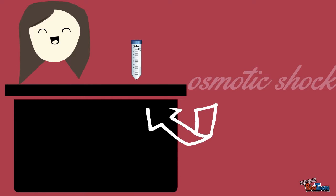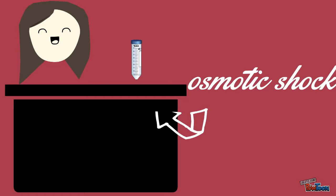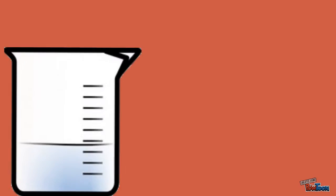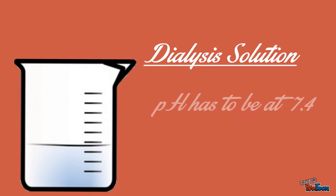Steph, you can get started on our osmotic shock solution, which is used to change the solute concentration around the cell, which changes water movement across the cell membrane. This helps with cell lysis since the protein is located in the periplasm. I'll start with the dialysis solution, which we need to get to pH 7.4 and will be used later.